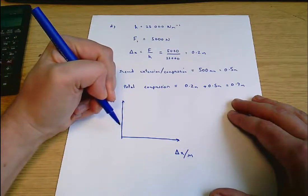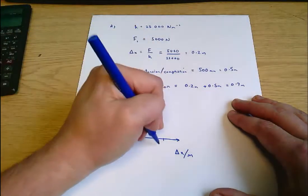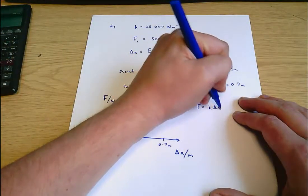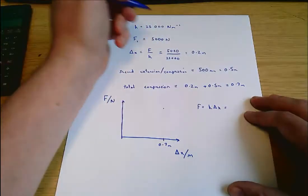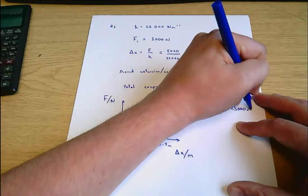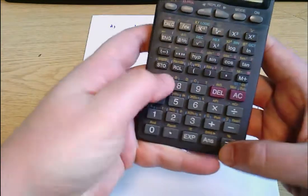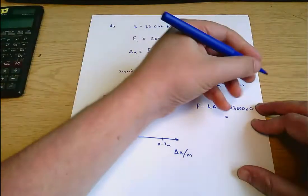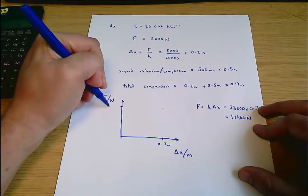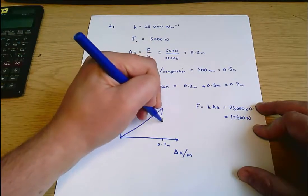Our graph, we know our total extension is 0.7 meters. F equals K delta X equals 25,000 times 0.7 is 17,500 newtons. That's the total force that we need to get that extension. So this here is 17,500. And that's our force displacement plot.